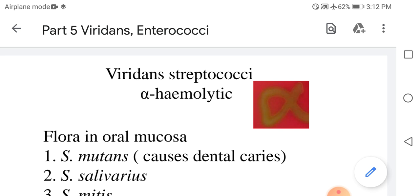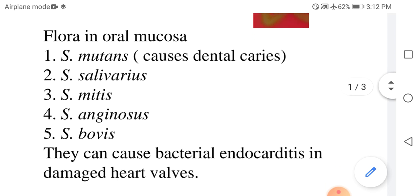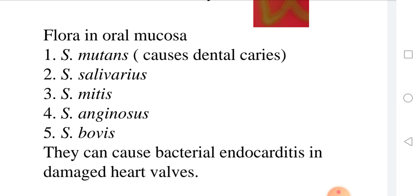These are alpha hemolytic. They are found as flora in oral mucosa. Different species: Streptococcus mutans. This is a common cause of dental caries.